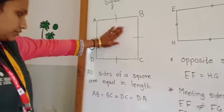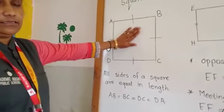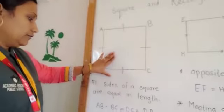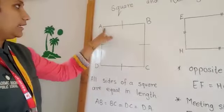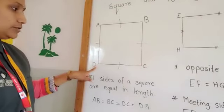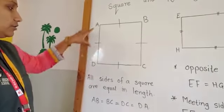Now, all sides of a square are equal in length. In the square, all sides of this square are equal. AB is equal to BC, BC is equal to DC, and DC is equal to AD.